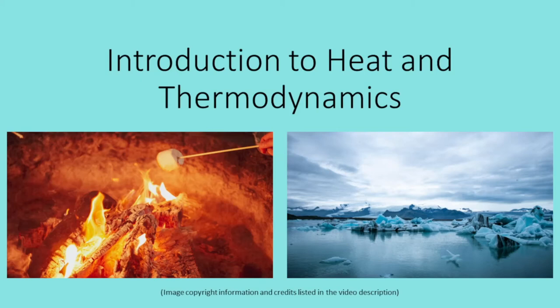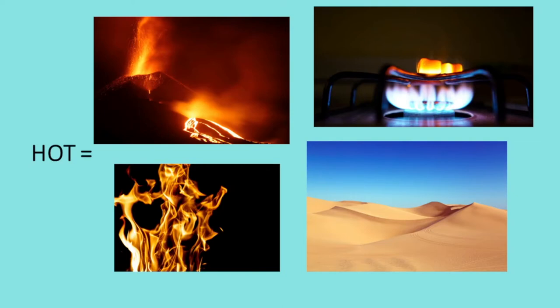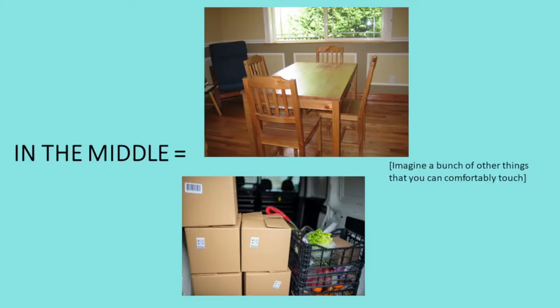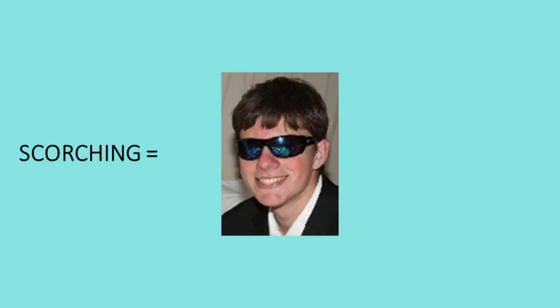Let's talk about heat and thermodynamics. Everyone has a pretty decent grasp of the general concepts of heat and temperature. Things like fire and stoves have high temperatures, so they're hot to be near. Things like snow and ice have low temperatures, so they're cold to the touch. Most everyday objects, like tables and chairs, are somewhere in between. A photo of myself would be considered hot too, though for different reasons.